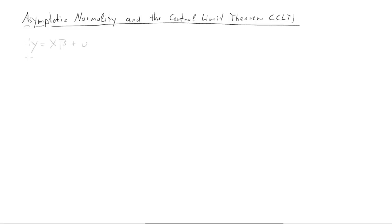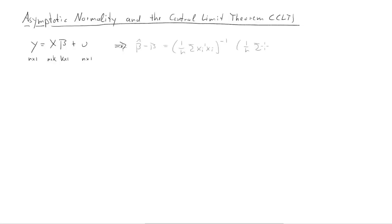In this clip, we will discuss the asymptotic normality of OLS parameter estimators. Let's start with our standard model y = x*beta + u. We should remember the dimensions: y is n by 1, x is n by k, with k explanatory variables.